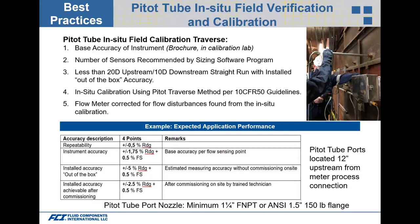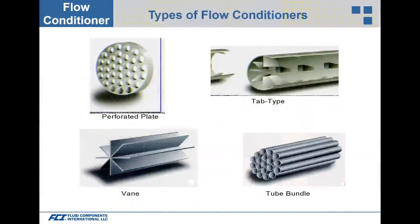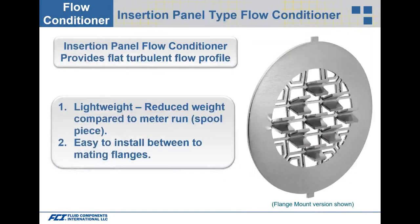Not only does the pitot tube traverse correct the installed accuracy, but it also uses a third-party meter to confirm the flow meter's accuracy. Gas flow conditioning is another option for smaller pipe diameters — 18 inch and smaller — using perforated plates, tab types, tube bundles, or vanes. An insertion panel flow conditioner creates a flat turbulent flow profile downstream of the conditioner. If the meter is calibrated through this flat turbulent profile at the factory and the same setup is used in the application, the flow profile will always be consistent and accurate.